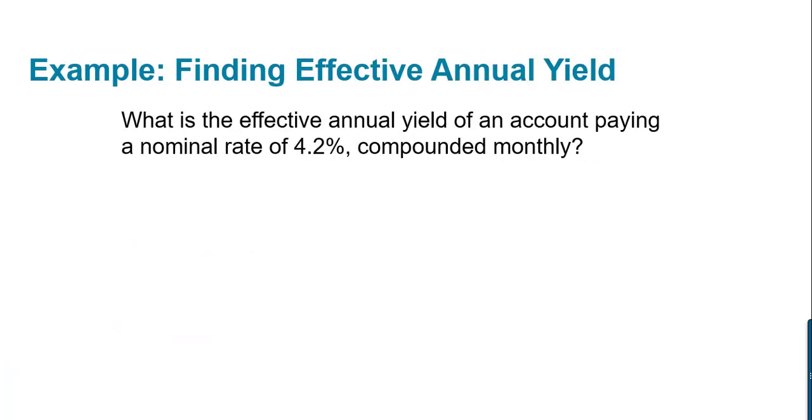Here's an example where we're asked to calculate the effective annual yield. In this case, the account is paying a nominal rate of 4.2% compounded monthly. So we want to know what's that equivalent to in terms of simple interest.